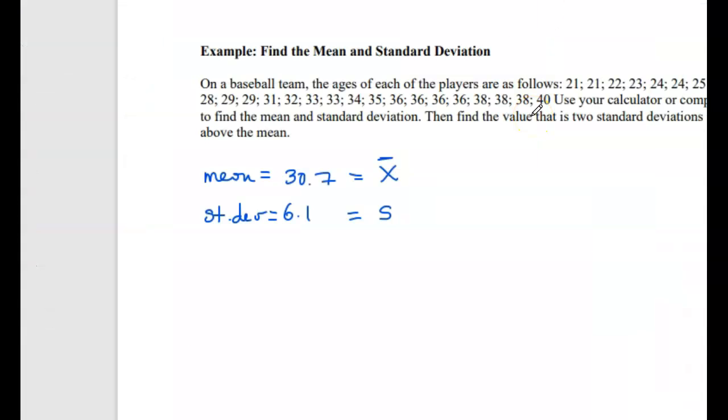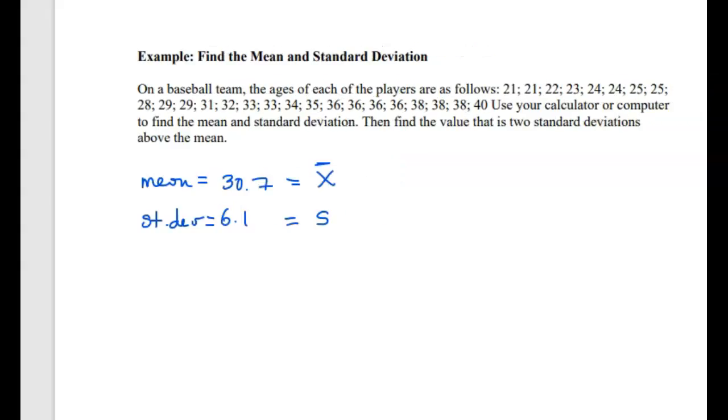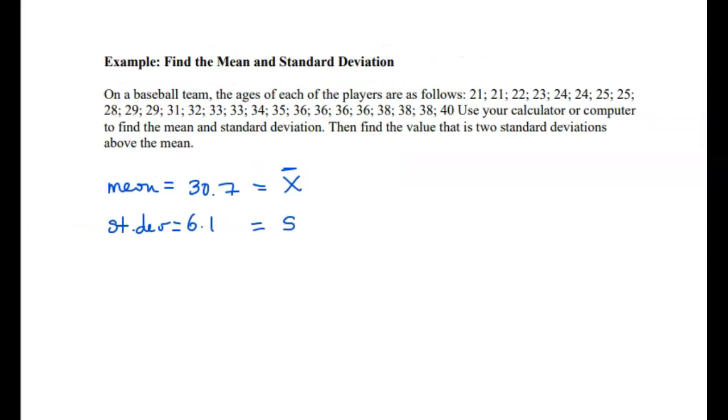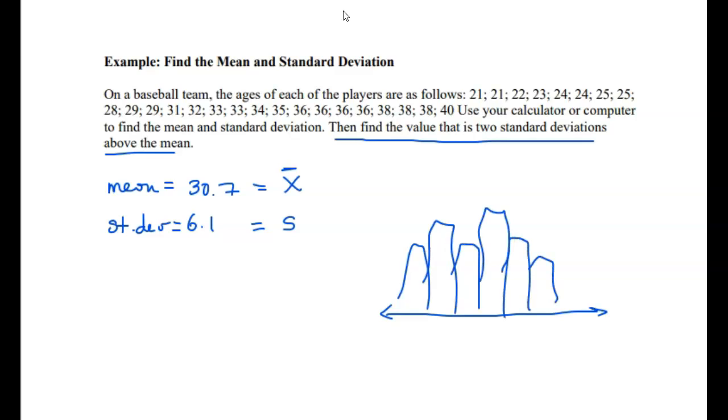Okay, so the value that is two standard deviations above the mean. If we make a graph of our distribution, you can see we sort of got some bars and things. All right, whatever the distribution is, then the mean is some sort of center of the data. Okay, so the mean we found was at 30.7. Let's say that's 30.7.